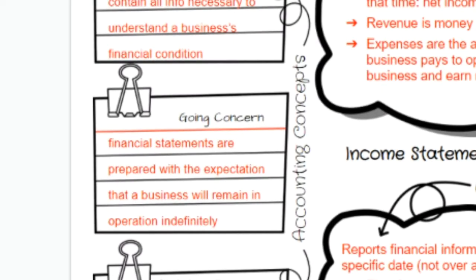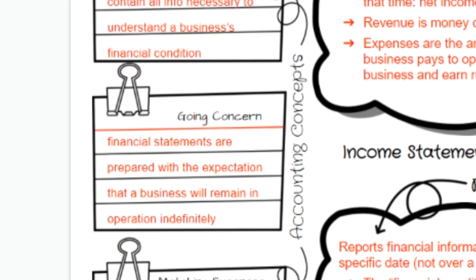Next, we have going concern, and this means that financial statements are prepared with the expectation that a business will remain in operation indefinitely. Nobody starts a business thinking they're going to fail. When somebody starts a business, they assume or hope it will continue, and once they no longer want to run it, they can pass it down to a family member or sell it for a profit.